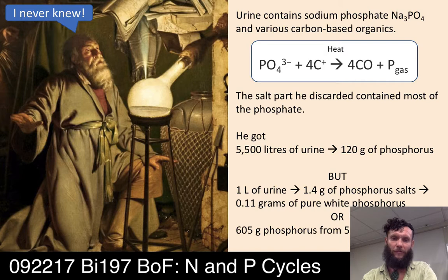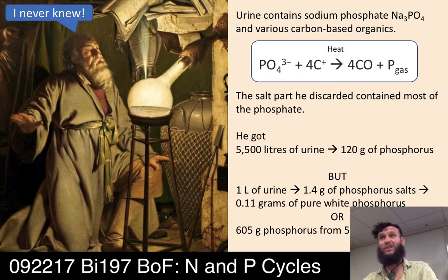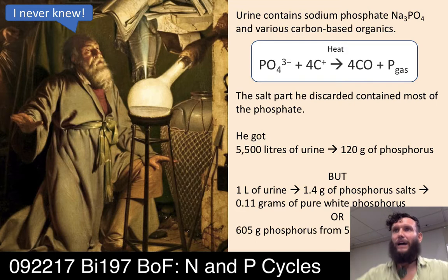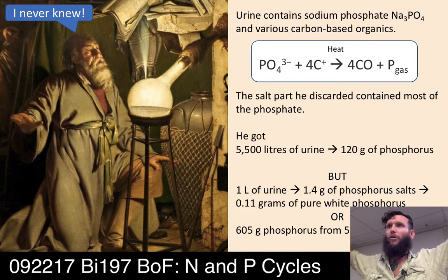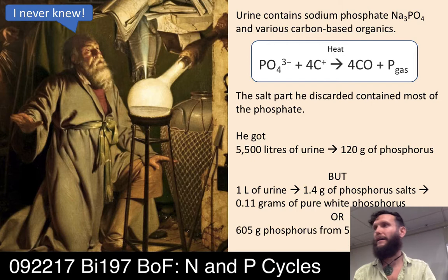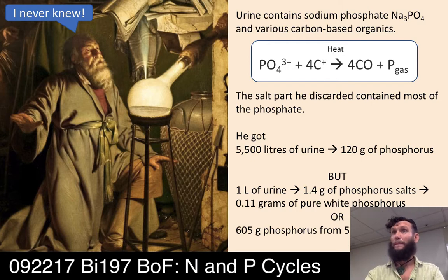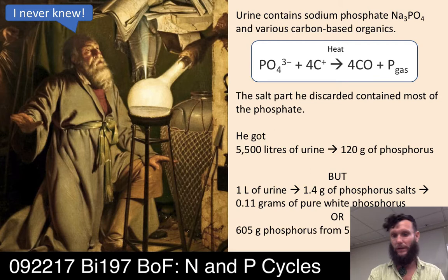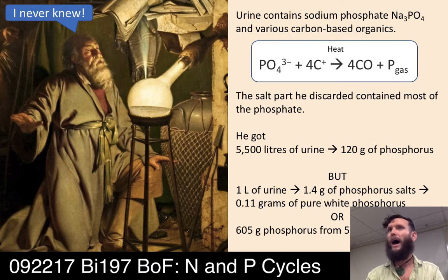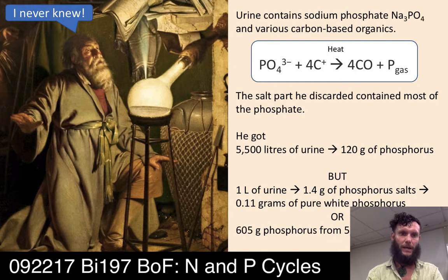The salt he discarded was actually most of the phosphate — he could have gotten much more if he'd reacted that salt with the carbon too. From 5,500 liters (1,500 gallons) of urine he got only 120 grams of phosphorus — like a box of paperclips out of a room-sized volume of urine. One liter of urine contains 1.4 grams of phosphorus salts or 0.11 grams of pure white phosphorus; keeping the salt could have given him five times as much.